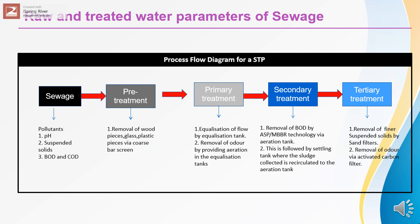Then it moves to the primary treatment system, where the flow is equalized and odor is removed by providing aeration in the equalization tank. Then it moves to the secondary treatment system, where the BOD is removed by various technologies like activated sludge process (ASP), moving bed bioreactor (MBBR), membrane bioreactor (MBR), and sequential batch reactor (SBR). In this course, we are going to concentrate on ASP and MBBR.